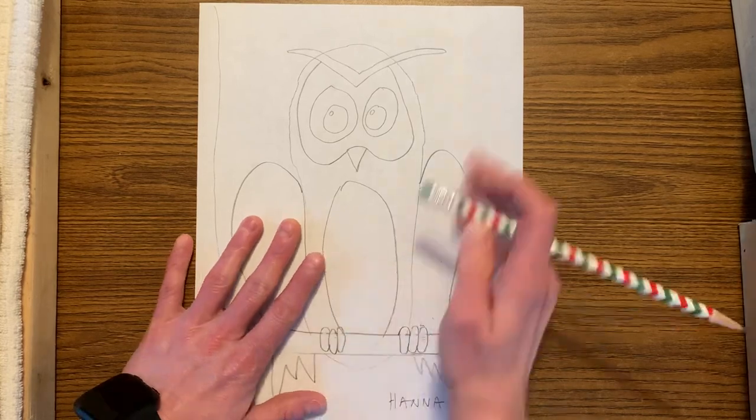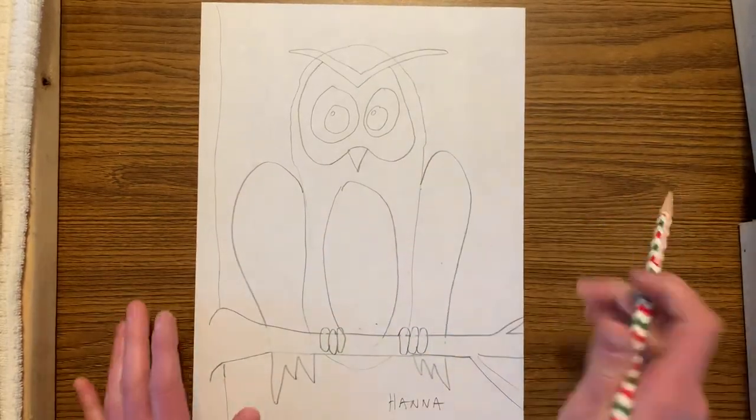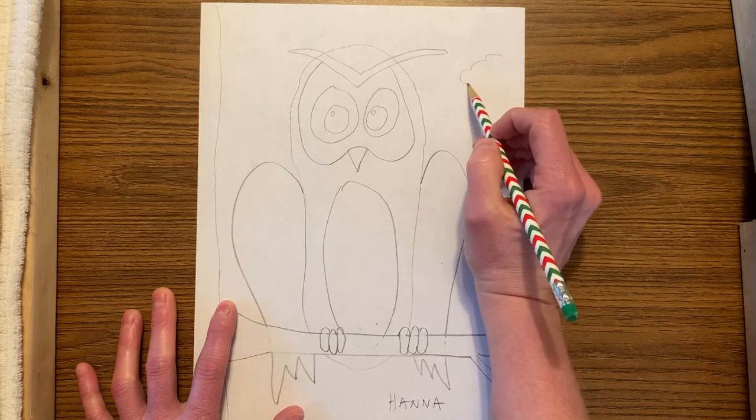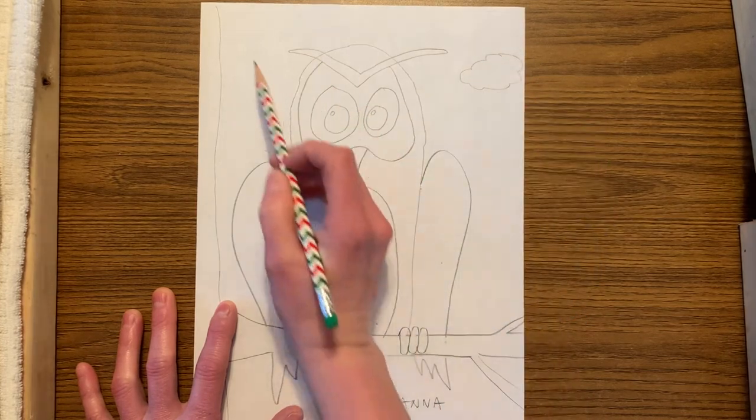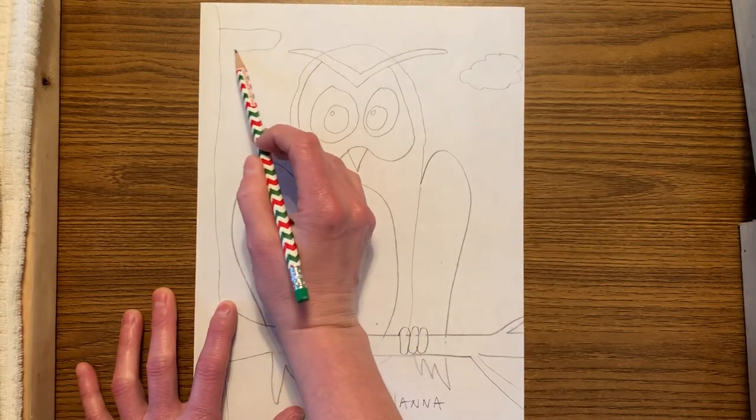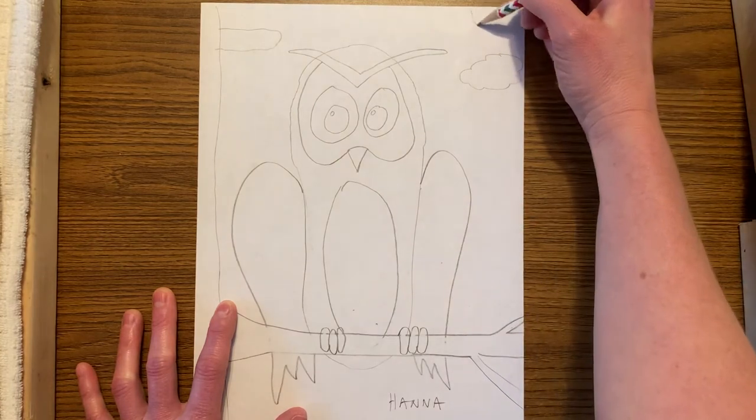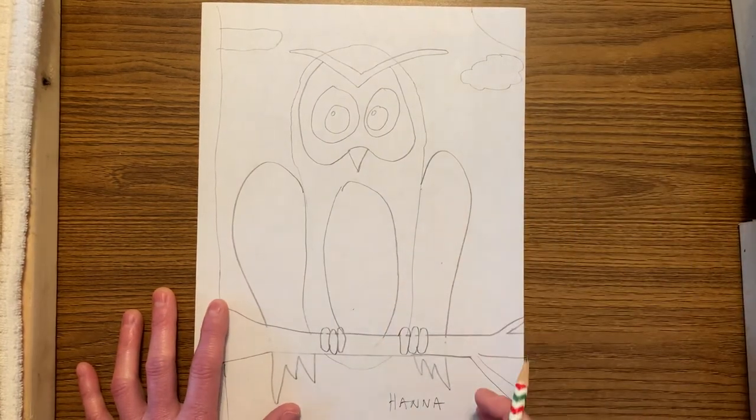And then they're usually up in the sky. So I'm going to also put some clouds in there. Your clouds could look like this, or they could be a little bit more like this. And if you wanted to put the sun up there, you could. Maybe the moon. Totally up to you.